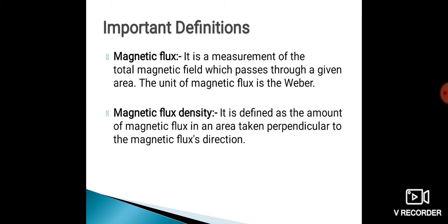Next is magnetic flux. It is a measurement of the total magnetic field which passes through a given area. The unit of magnetic flux is the Weber.